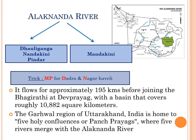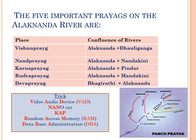In the Garhwal region of Uttarakhand, there are 5 holy confluences, also known as Panchprayag, where 5 rivers merge with the Alaknanda river. The first is Vishnuprayag, which is a confluence of Alaknanda and Daliganga. To remember this, use VAD — Video Audio Device — where V is Vishnuprayag, A is Alaknanda, and D is Daliganga.